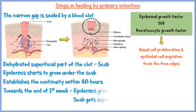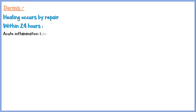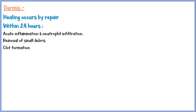Towards the end of the first week, the epidermis grows more and the scab gets separated from the skin. In the dermis, healing occurs by repair. Within 24 hours after injury, acute inflammation sets in and neutrophils infiltrate to the site. Neutrophils then remove the small debris present. If there is associated bleeding, there will be clot formation as well. Towards the later hours of inflammation, macrophages will also recruit to the site.